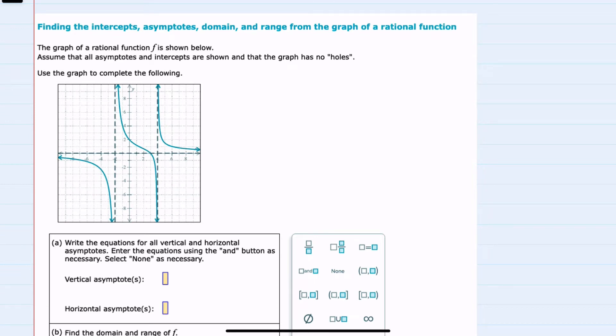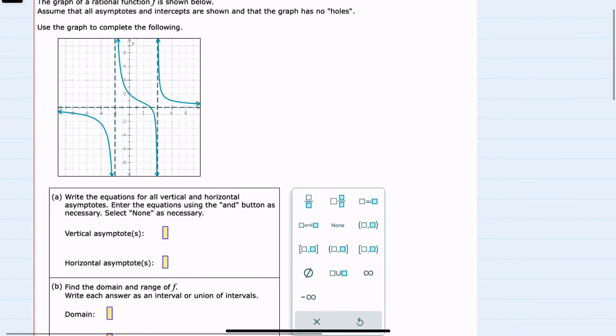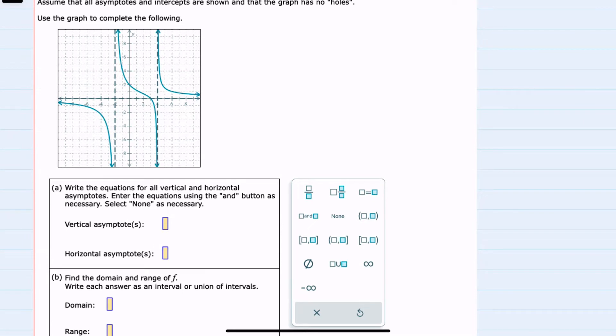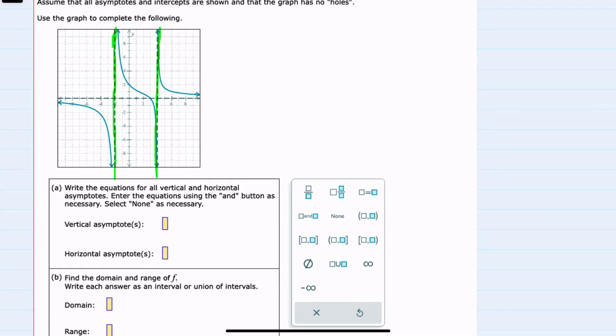We're given our graph here and our first question is to find the vertical asymptotes. So we can see from the picture that these two are our vertical asymptotes. The line is not crossing these asymptotes but it is getting closer and closer on both sides.